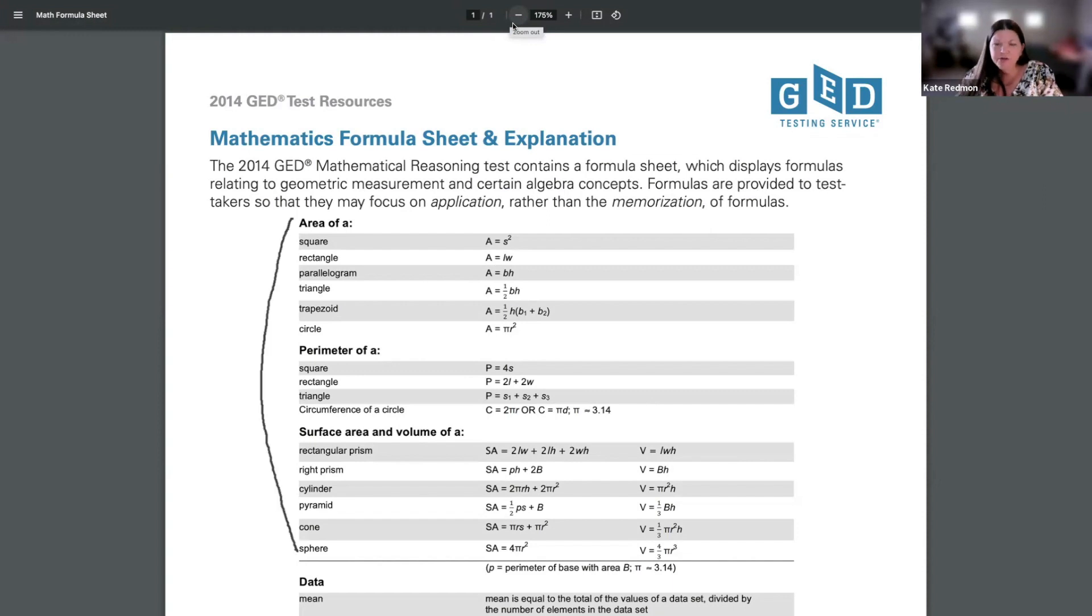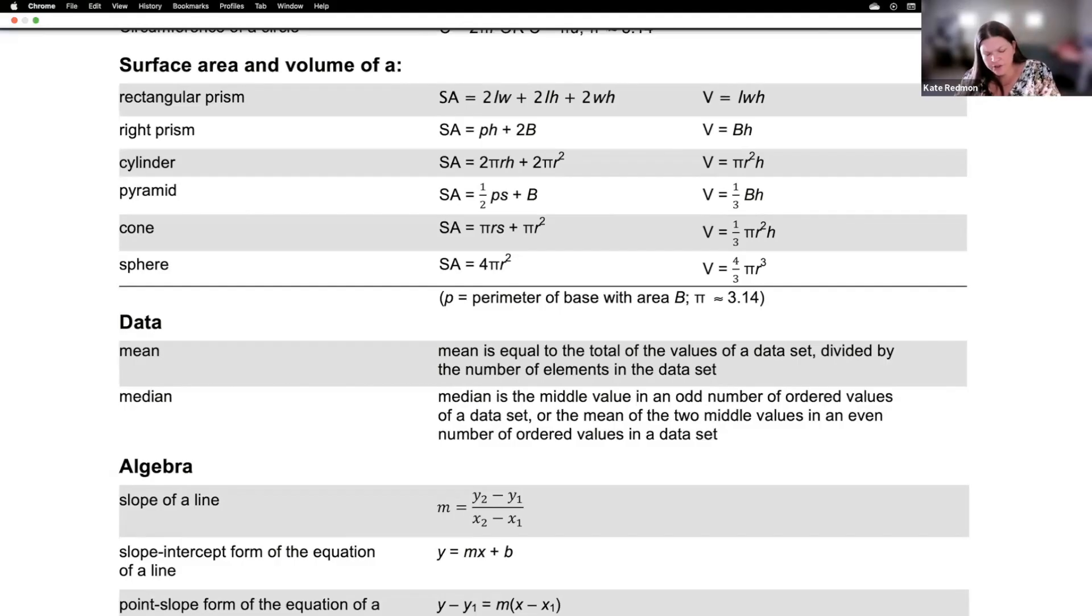Directly underneath the geometry formulas on the GED formula sheet are the data formulas. But interestingly, if you look at the two data formulas for mean and median, you're going to notice that they don't actually give it to you in formula form. They give you some verbal directions. Same idea - formulas are just directions, relationships written in the language of algebra. This here is written in English, but we were talking that that value was the median.